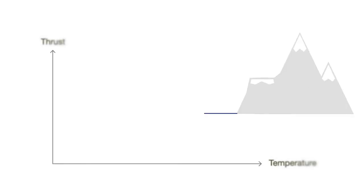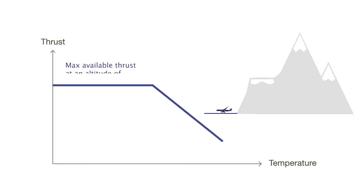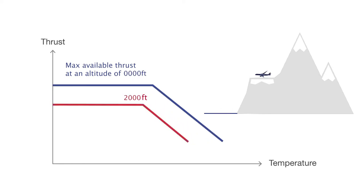Also, air density affects engine thrust. For a take-off at high ambient temperature, the thrust will be decreased. Equally, for a take-off at a high altitude airport, the thrust will be reduced as well. This is because the air is less dense and there is less mass flow through the engine.